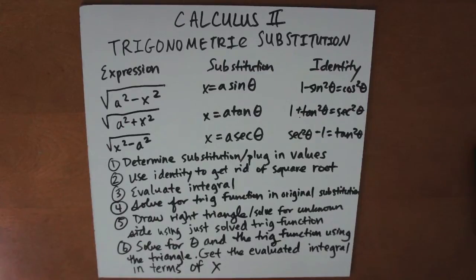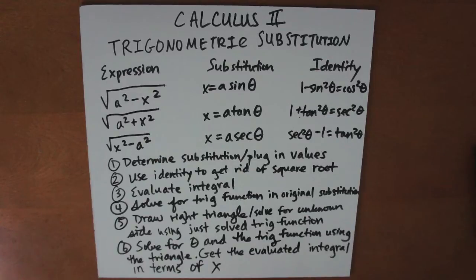Finally, if you have the expression the square root of x squared minus a squared, you would use the substitution x equals a secant theta and the identity secant squared theta minus 1 equals tangent squared theta.